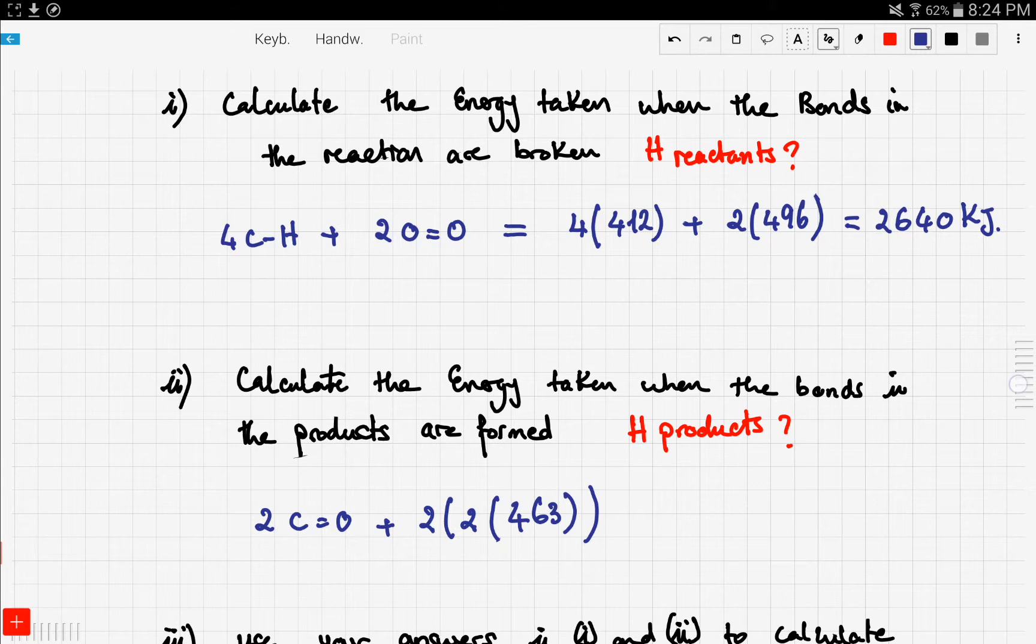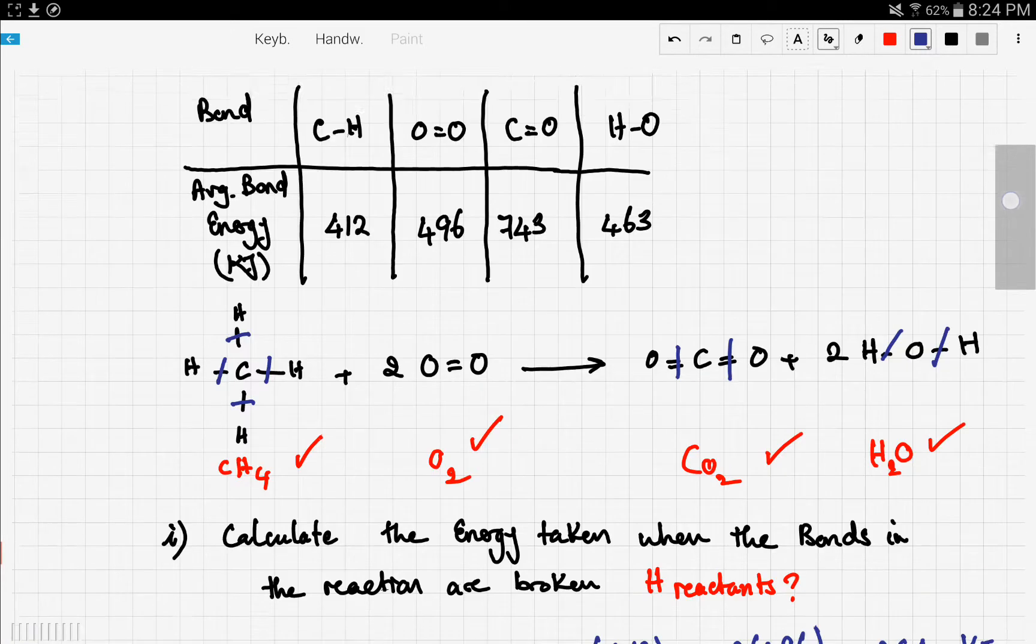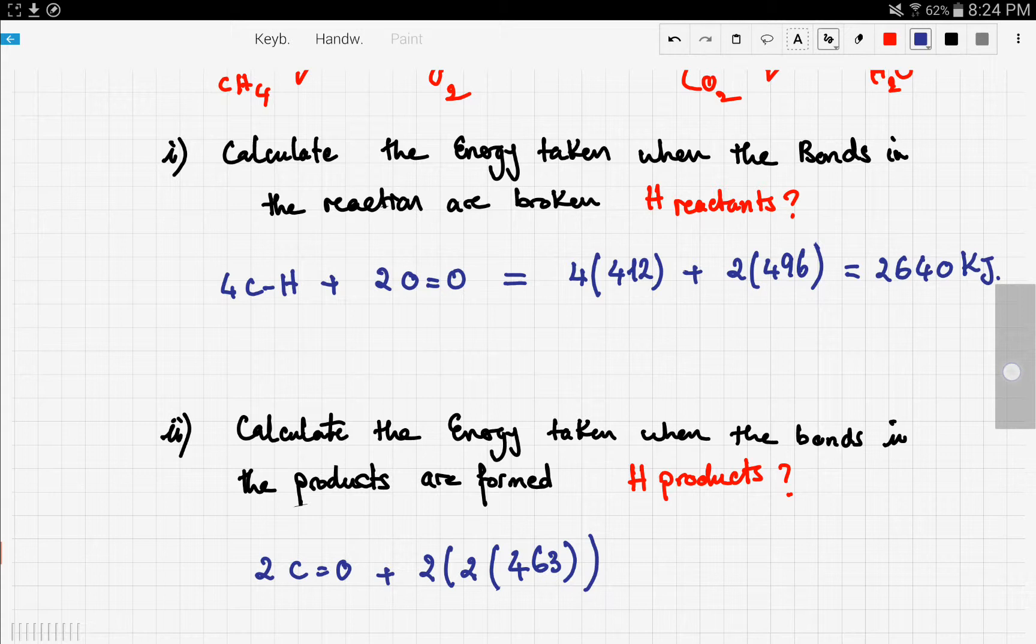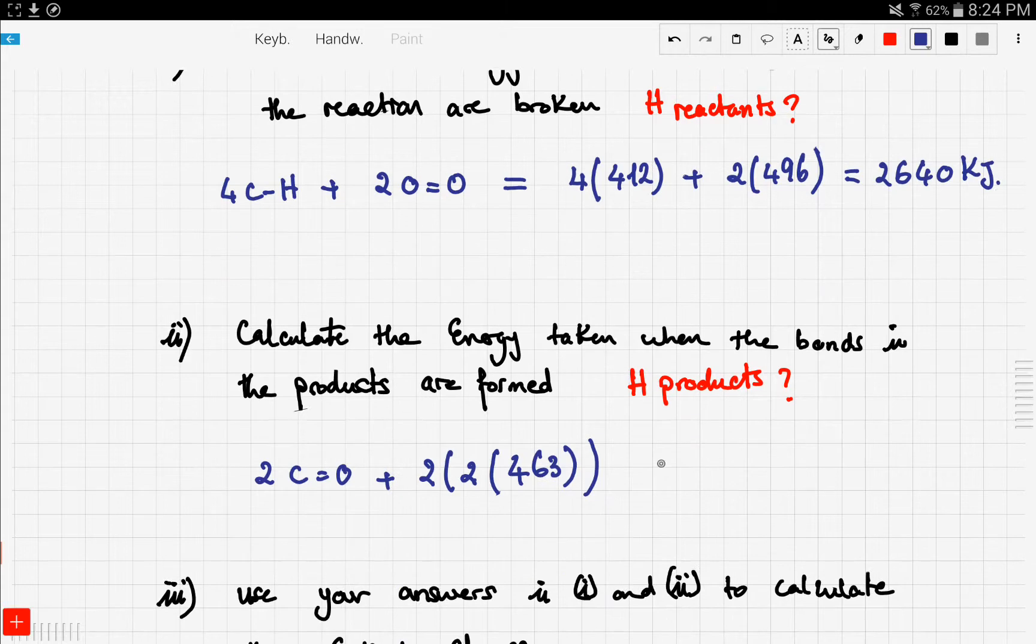And let's see how the CO bond is worth. Well, it's worth 743. So let's do the math. So it's two times 743 plus four into 463. Now, this would be equal to 3338 kilojoules, okay?